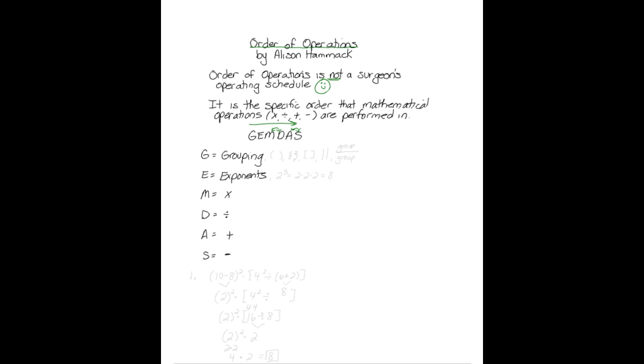G represents grouping: parentheses, curly brackets, square brackets, absolute value bars, or some type of fraction where you would group the numerator and then group the denominator.